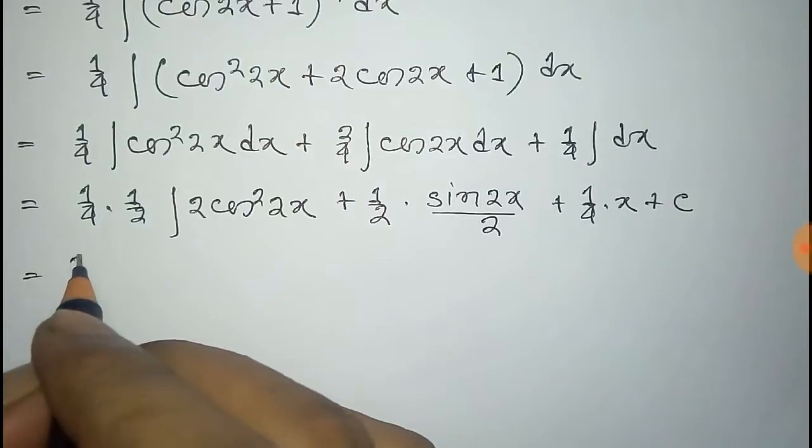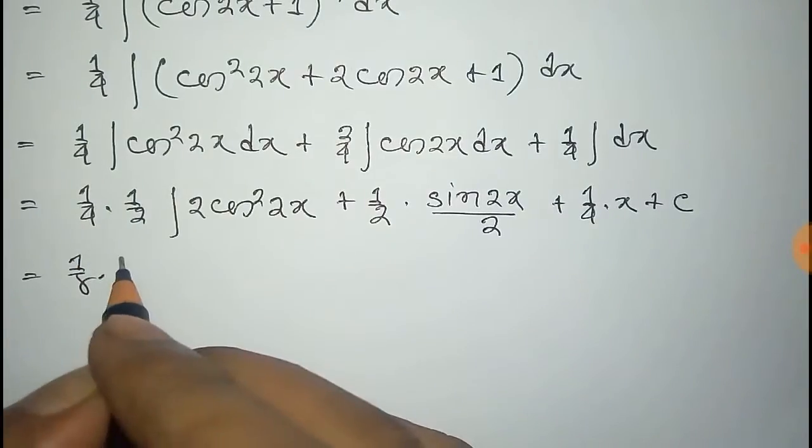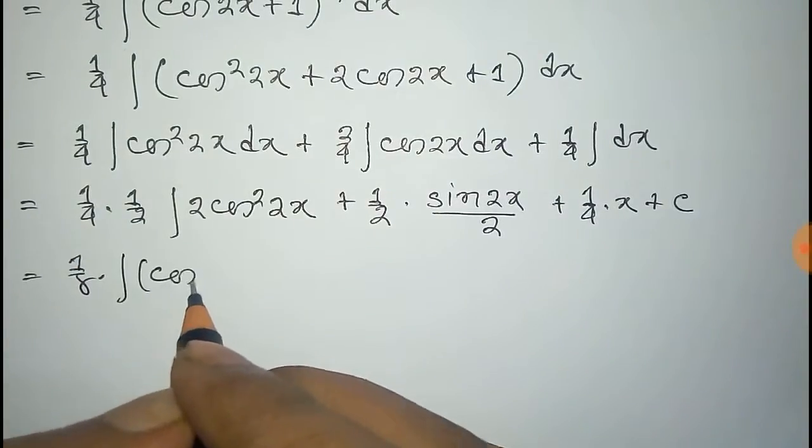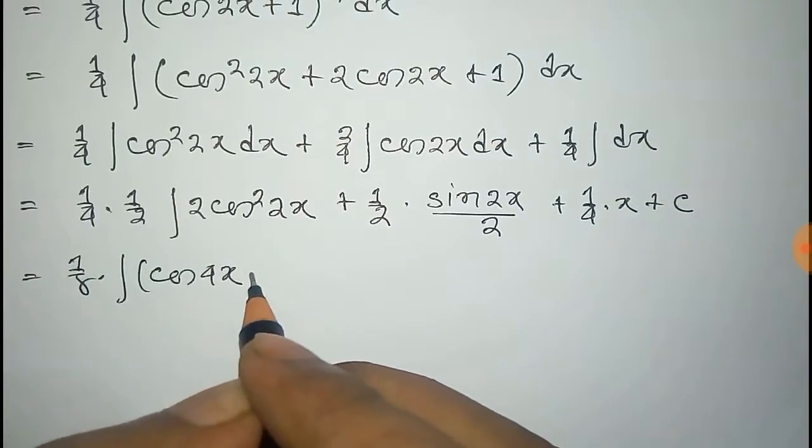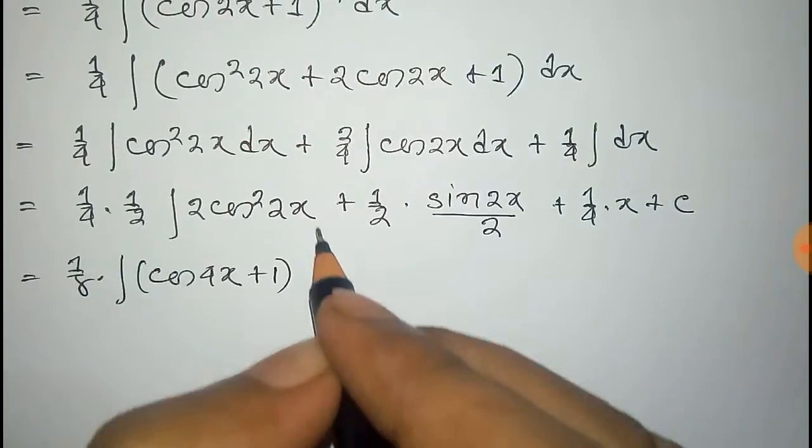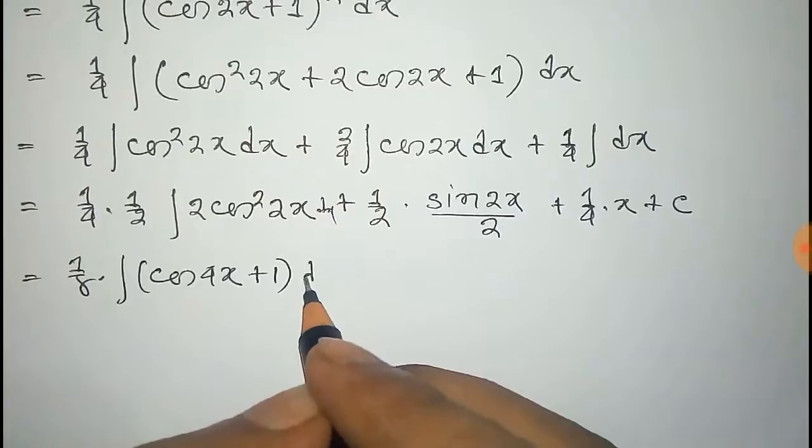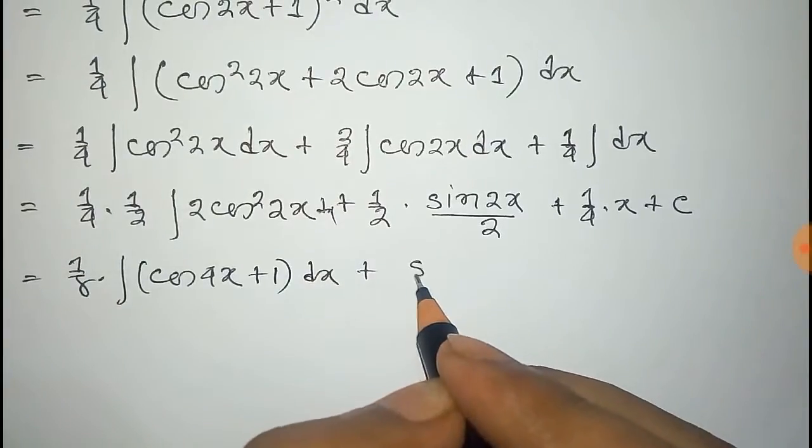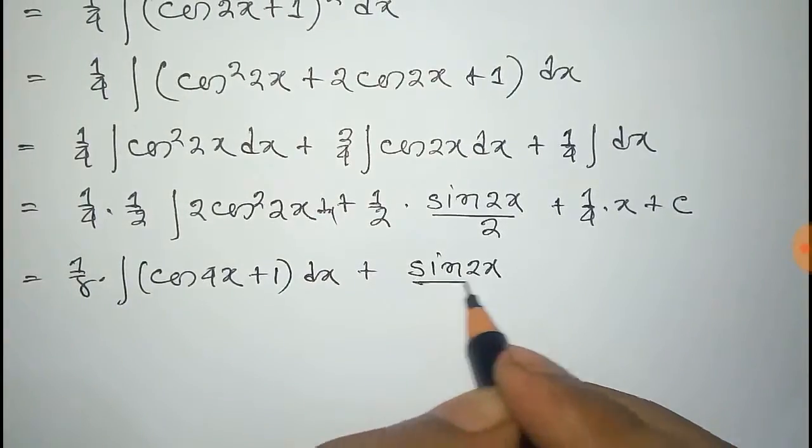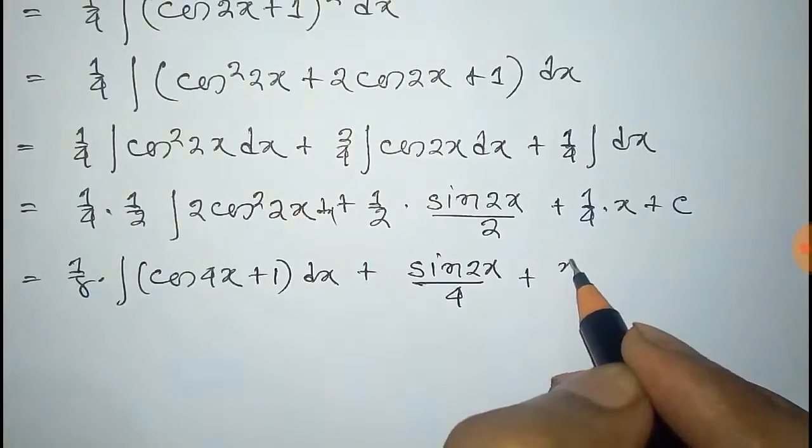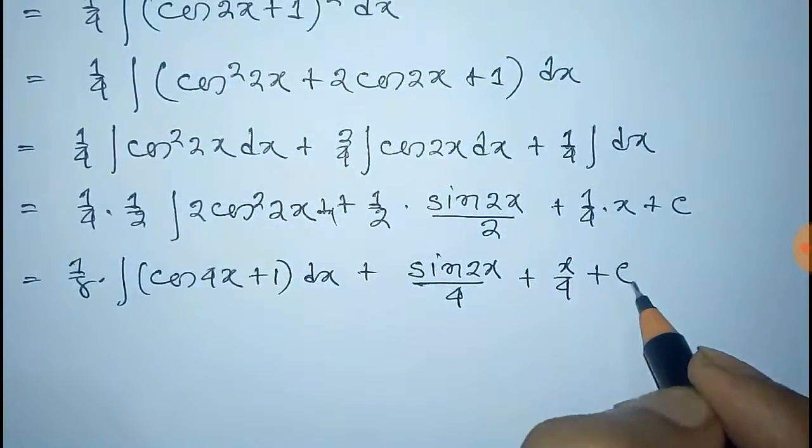Now this is equal to 1 by 8. We can write 2 cos square 2x as cos 4x plus 1 and there will be dx plus 1 by 4 sin 2x by 4 plus x by 4 plus c.